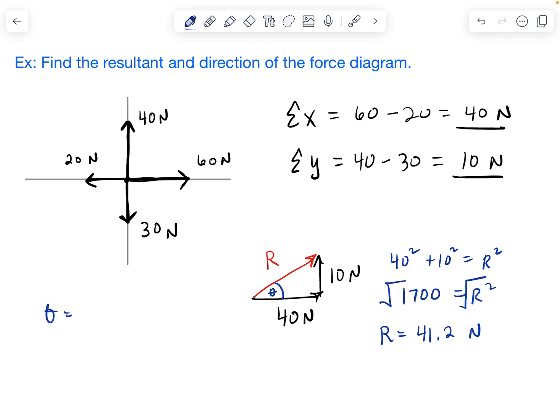So theta is going to equal the inverse tangent of opposite, which was 10, over adjacent, which is 40. So hit your second or your shift key tangent on your calculator. And we're going to do 10 divided by 40.